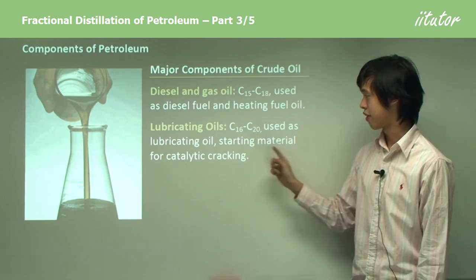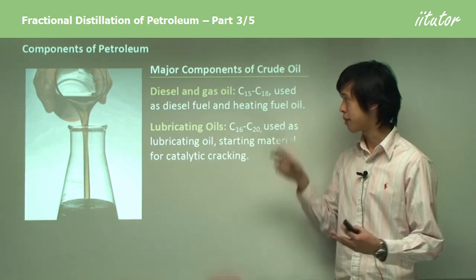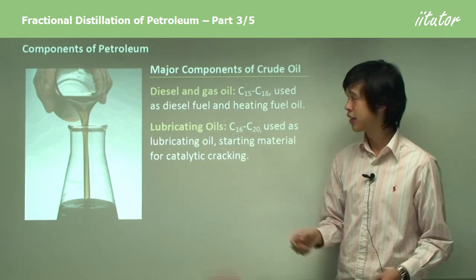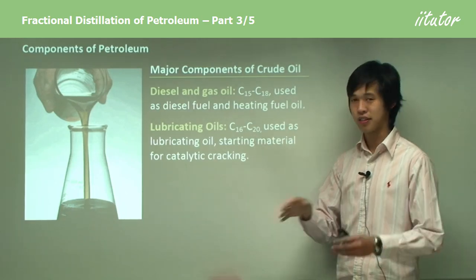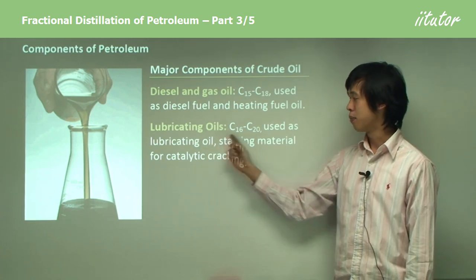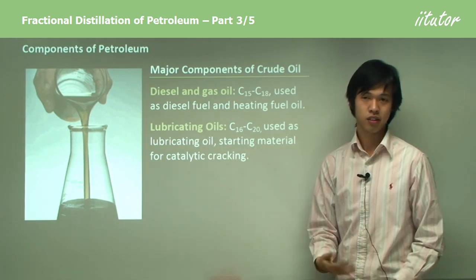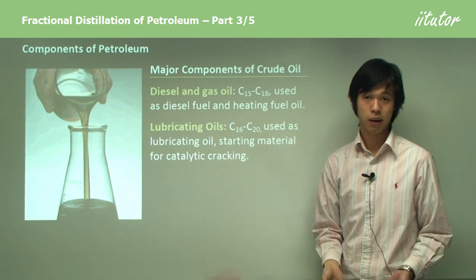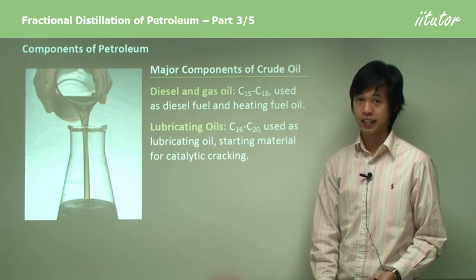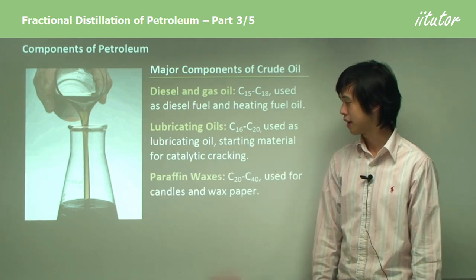Lubricating oils are anywhere between C16 to C20. As you can see, there's a bit of overlap in some of them because of the boiling point range — C18 and C20 mix together here. Lubricating oil is simply used as lubricating oil to stop things from jamming, and also as a starting material for catalytic cracking.